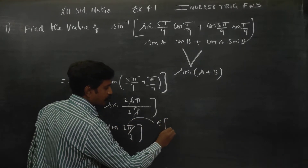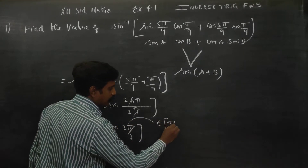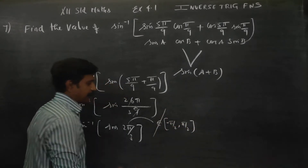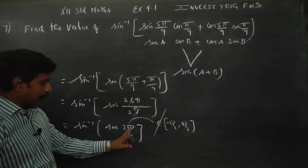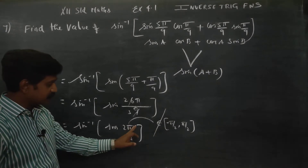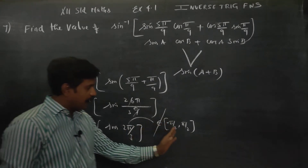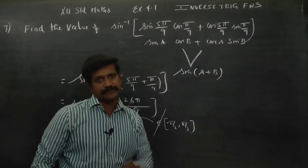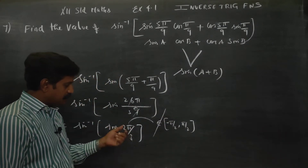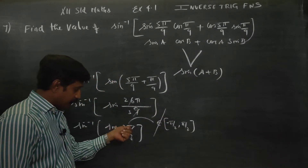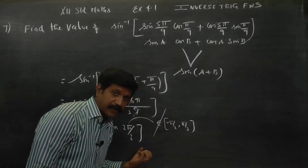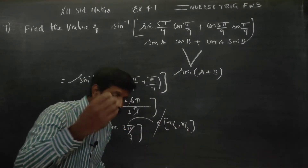This is sin inverse of sin(2π/3), because 2π/3 is equivalent to 6π/3, which equals 120 degrees. This is the principal value candidate we need to check.